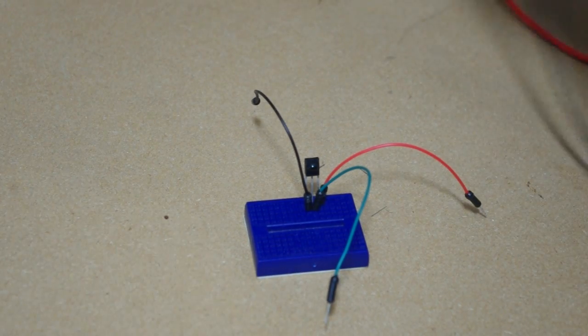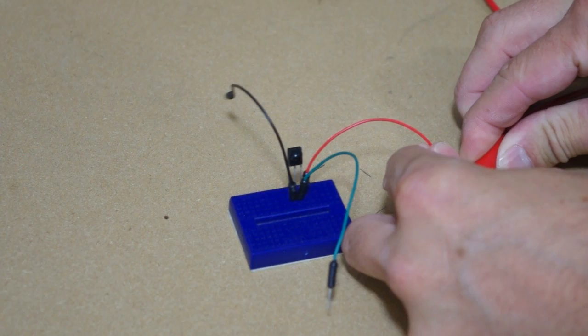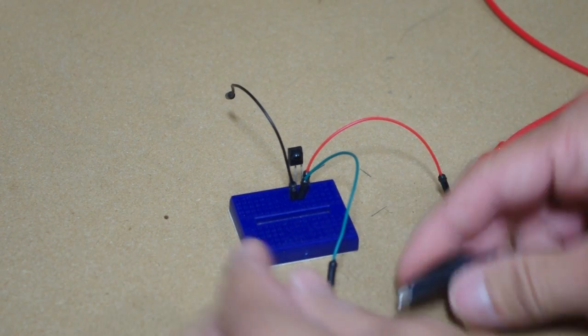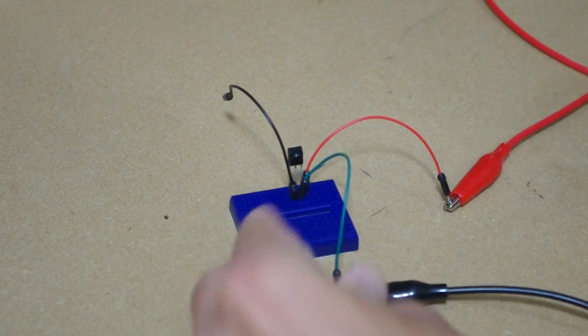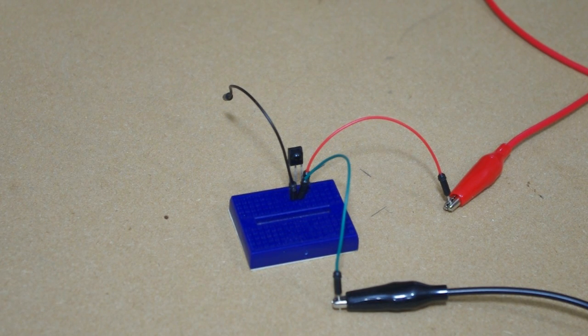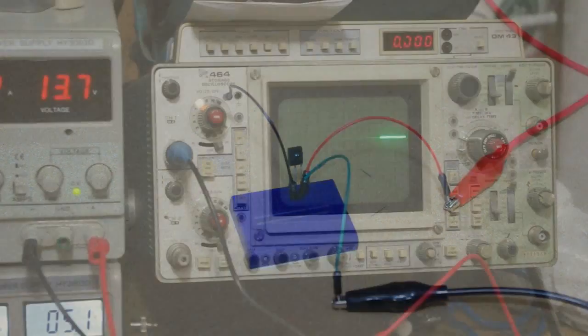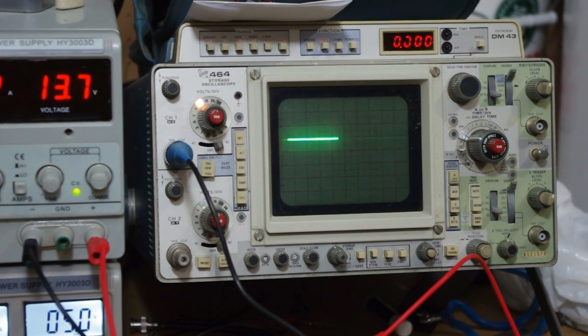This IR receiver that I have will demodulate any infrared signal from a remote that has a carrier frequency of 38 kilohertz. This is the most common. Most of your remotes are going to be 38 kilohertz, so if the first remote that you use doesn't work, just try another.